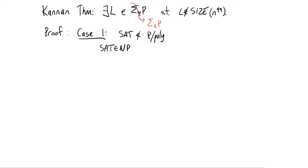Which is a subset of sigma 2P. And it, by assumption of case one, doesn't have circuits of any polynomial size. So it certainly doesn't have circuits of size n to the 99. So that case is very easy. That will be our language.